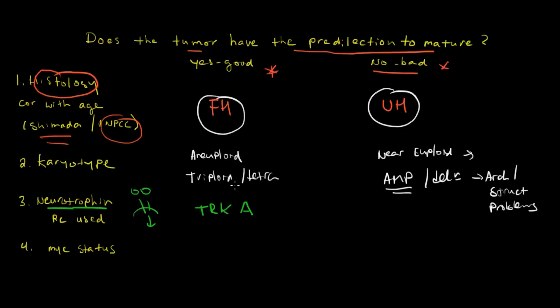If the tumor uses TrkA as its neurotrophin receptor, then it tends to be a good prognosis tumor. Whereas if a tumor uses TrkB or C as its neurotrophin, it tends to be a tumor that's more intractably immature.